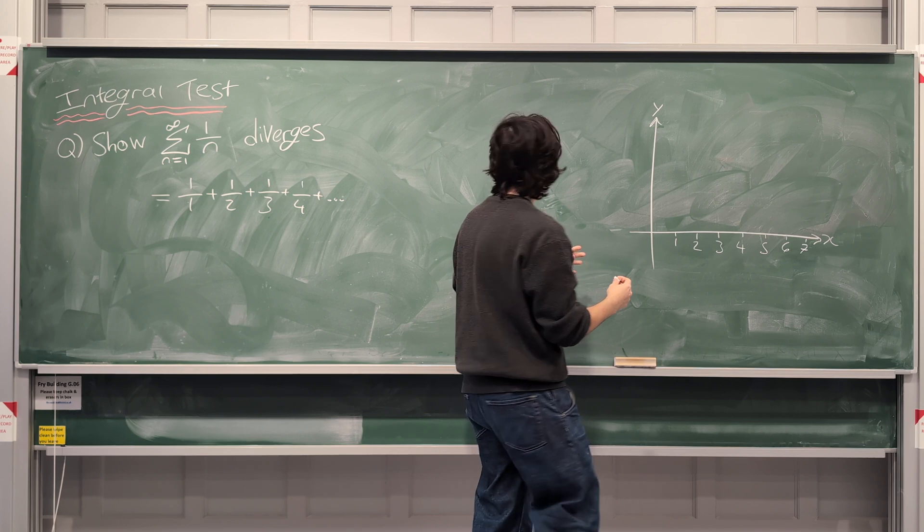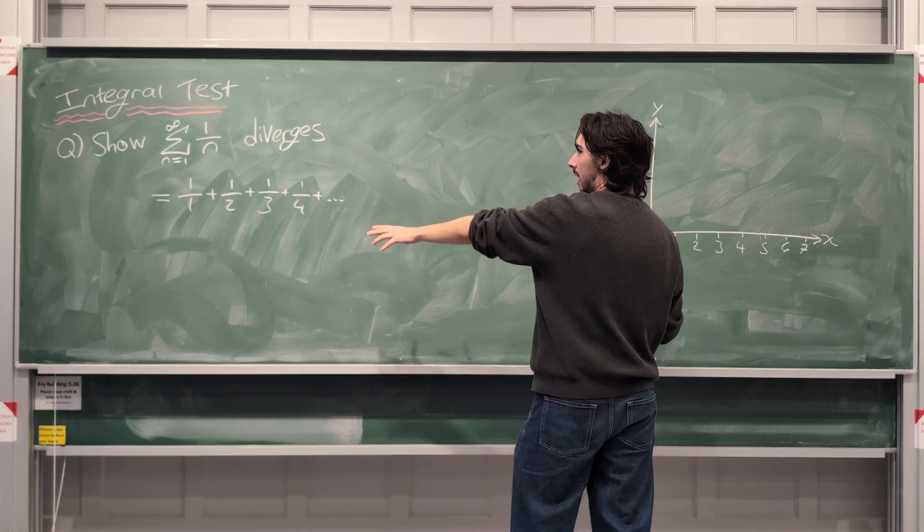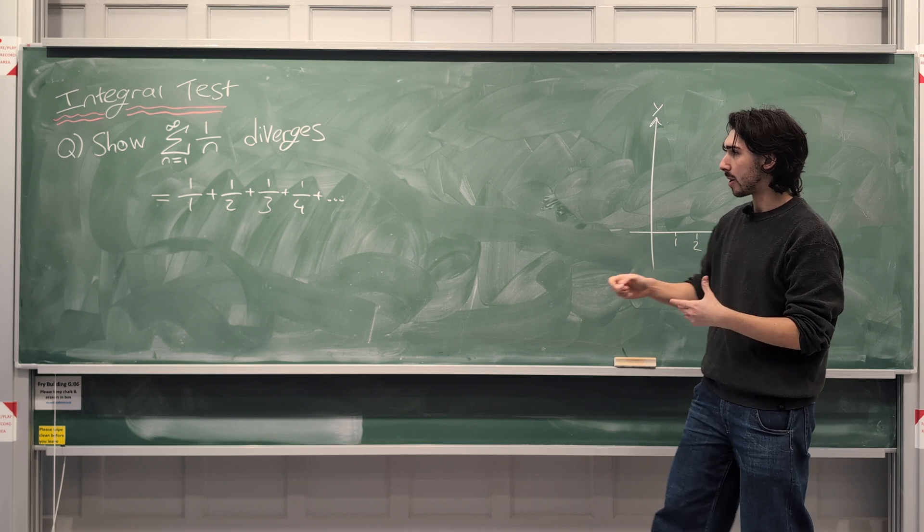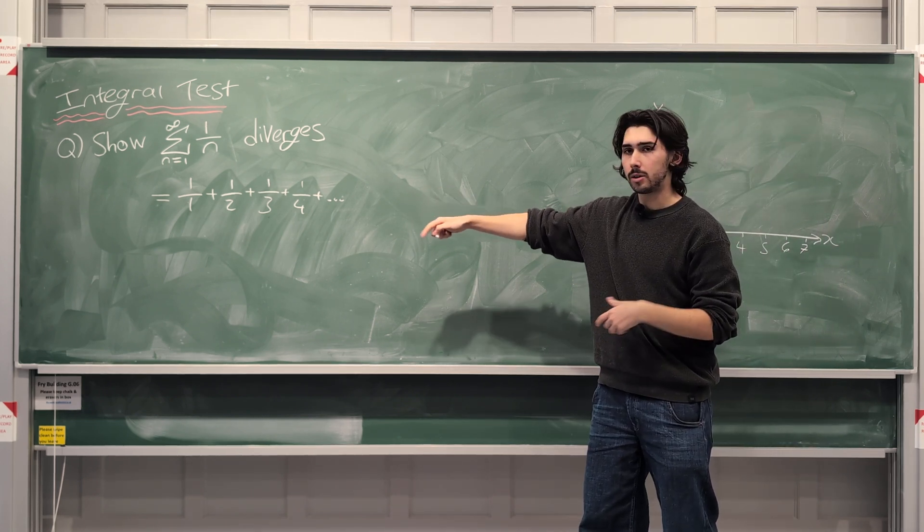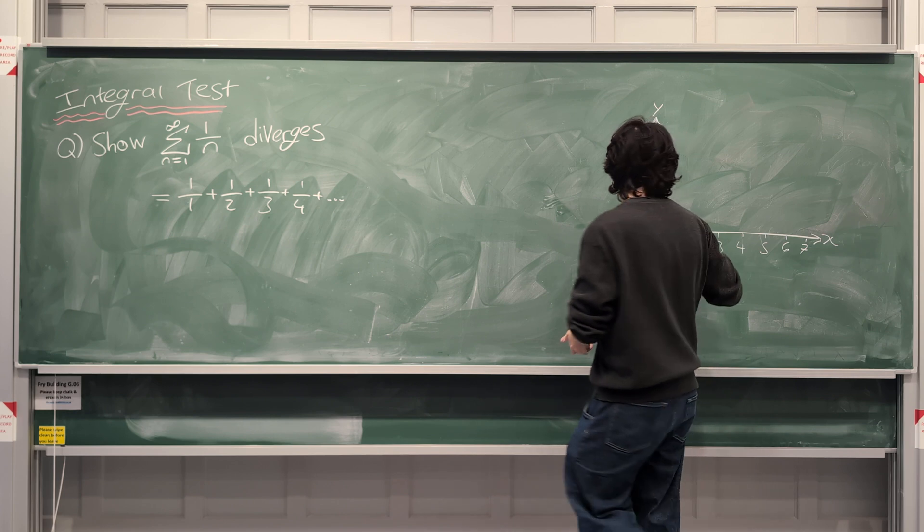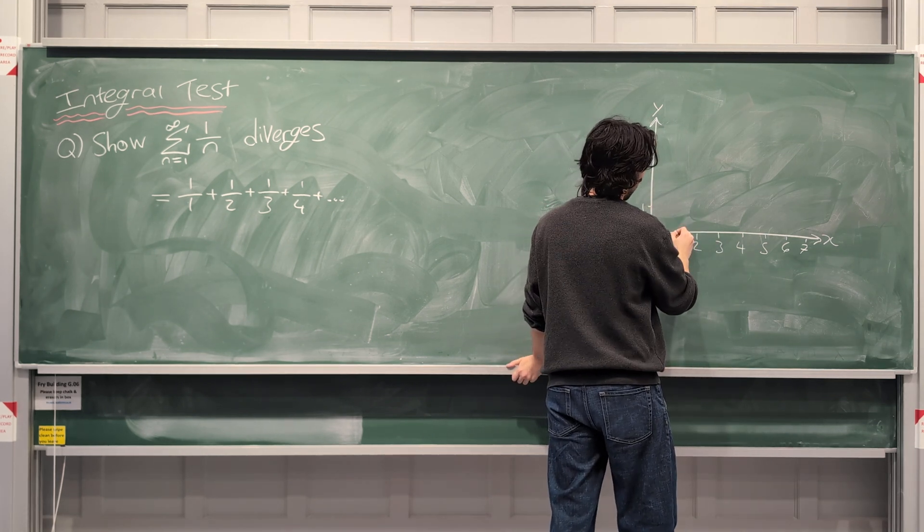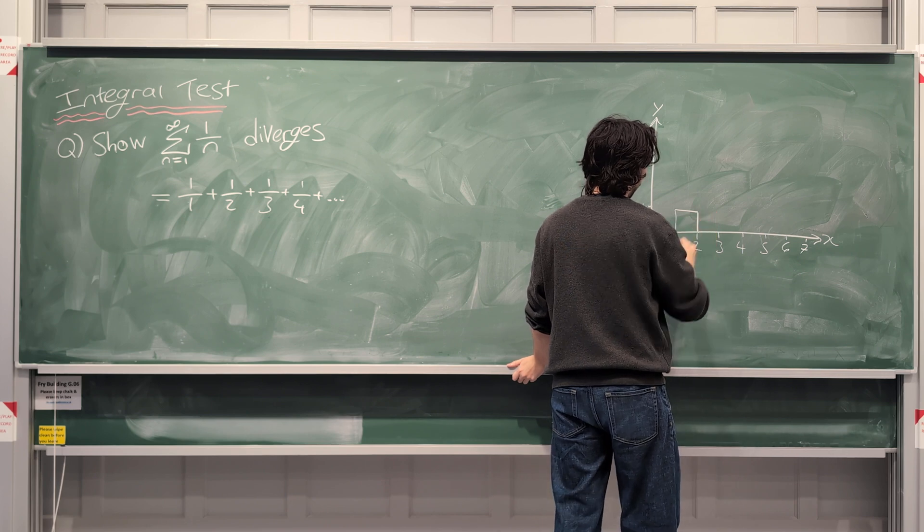So what I'm going to do is I'm going to draw this series as rectangles where each rectangle has the area 1, 1/2, 1/4, etc. So the first rectangle, this is going to be 1 here, the first rectangle will have an area of 1. This is the 1 over 1 term.